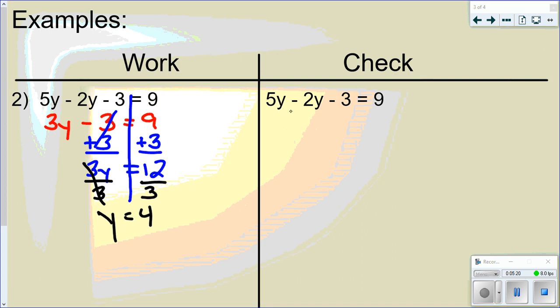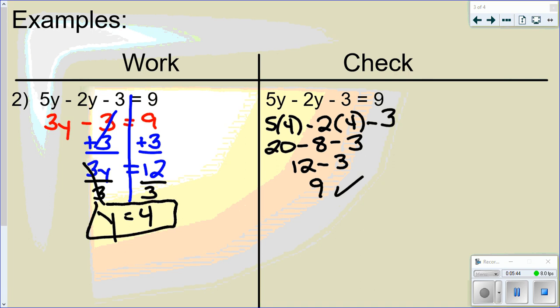So let's go check that. So I have 5 times 4 minus 2 times 4 minus 3. And I'm hoping this equals 9. So that would be 20 minus 8 minus 3. 20 minus 8 is 12. And then 12 minus 3 is 9. So this was the correct answer. Y equals 4.